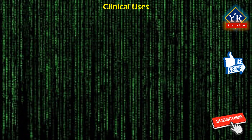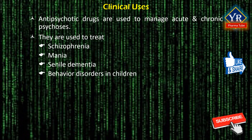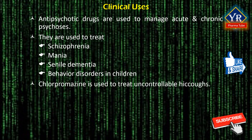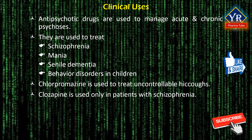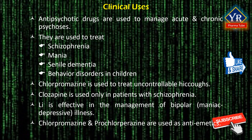Antipsychotic drugs are used to manage acute and chronic psychosis. In particular, they are used to treat psychosis like schizophrenia, mania, senile dementia, and behavior disorders in children. In addition to its antipsychotic properties, chlorpromazine is used to treat uncontrollable hiccups. Clozapine is used only in patients with schizophrenia that is unresponsive to other antipsychotic drugs. Lithium is effective in the management of bipolar illness. Some drugs such as chlorpromazine and prochlorperazine are used as antiemetic drugs. When given in small doses, neuroleptics are effective in the control of acute agitation in elderly patients.